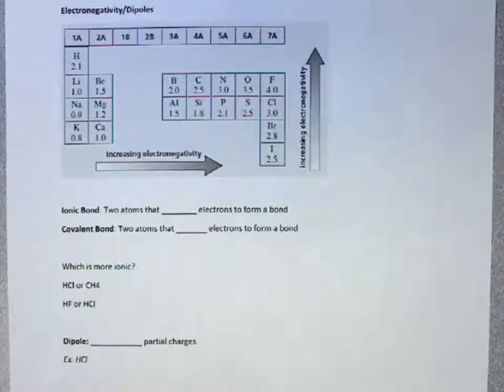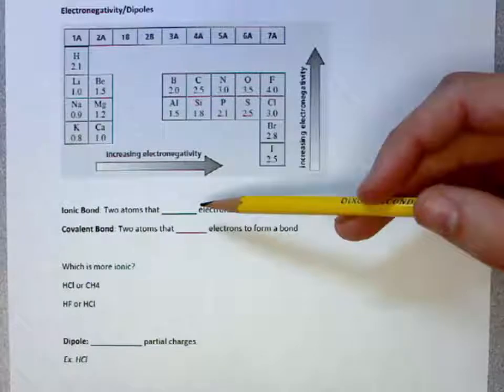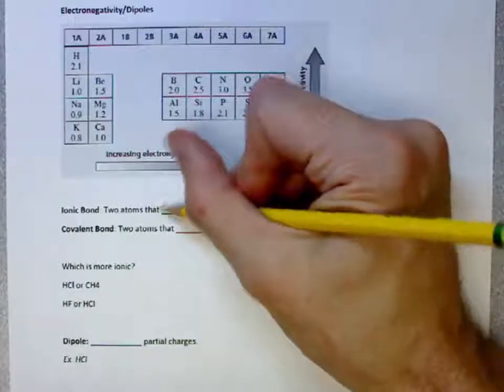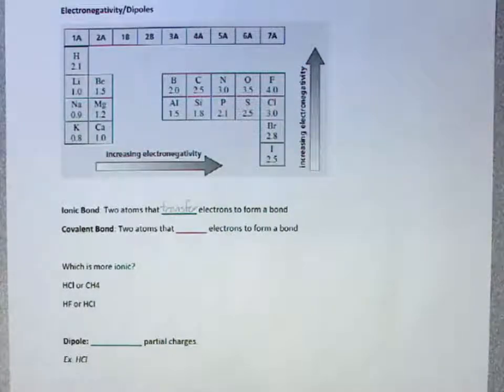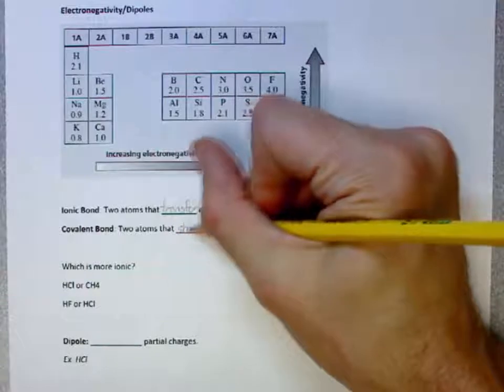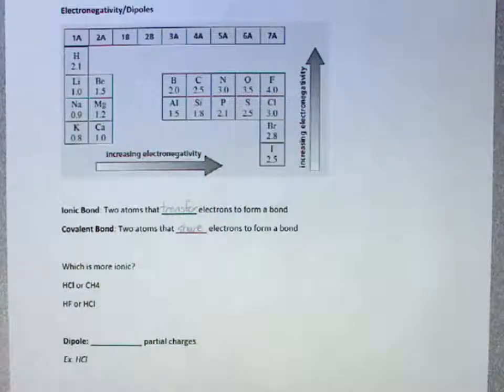There are ionic and covalent bonds. With ionic bonds, we have two atoms come together and they transfer electrons to form a bond. With covalent bonds, they're going to share electrons to form a bond.